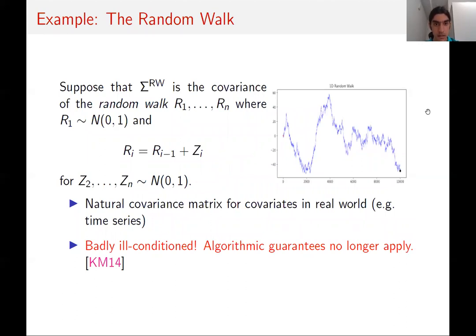The random walk is defined as prefix sums: r_i = z_1 + ... + z_i, where z_1 through z_n are independent standard normal random variables. This is a natural covariance matrix encountered in practice when covariates represent measurements of some process over time, where the measurement at time t is closely related to the measurement at time t-1. Unfortunately, because of this correlation, the covariance matrix sigma is badly ill-conditioned, so algorithmic guarantees for standard algorithms such as basis pursuit no longer apply.